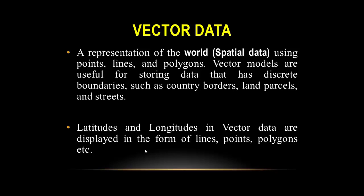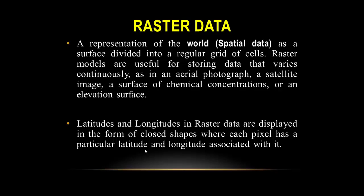Raster data is a representation of the world where spatial data is a surface divided into a regular grid of cells. Raster models are useful for storing data that varies continuously, such as in an aerial photograph, a satellite image, a surface of chemical concentration, or an elevation surface. Raster data is displayed in the form of closed shapes where each pixel has particular latitude and longitude associated with it.